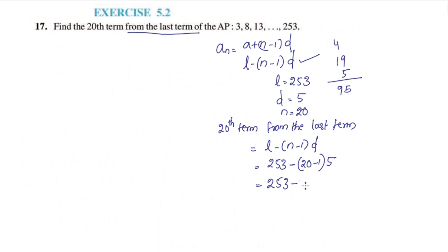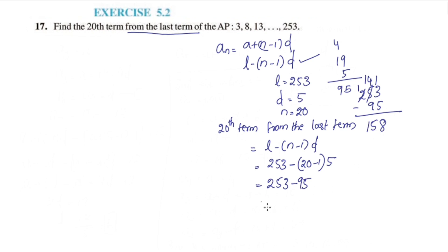19 into 5 is 95. So we have 253 minus 95, which equals 158. Therefore, the 20th term from the last term is 158.